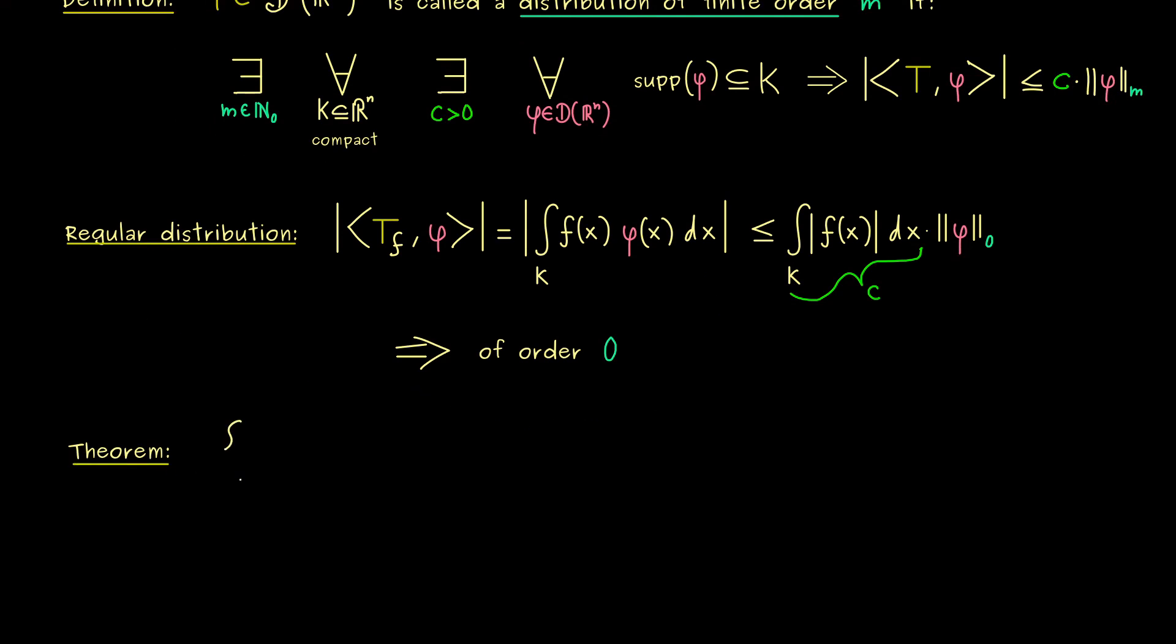Therefore, it makes sense to look at the set of all distributions of order zero. However, for this nice theorem, I also want to allow that the distributions are complex-valued. So they are allowed to map a test function to a complex number. But you already know this does not change anything in any definitions. So the only thing is either we have the absolute value in the real numbers or in the complex numbers. However, all formulas look exactly the same.